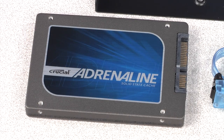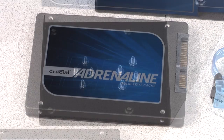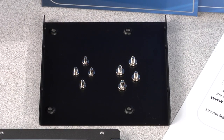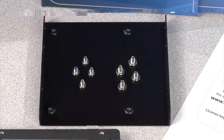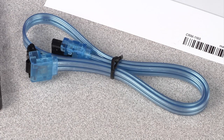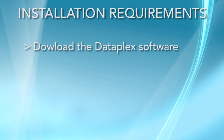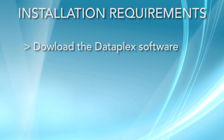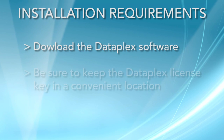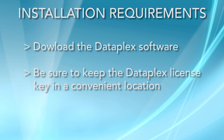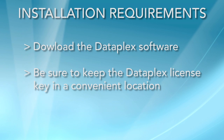Make sure you have all the components supplied in the packaging of the Adrenaline Cache Solution, which includes the 50 GB Crucial Adrenaline Solid State Cache, the 3.5 inch adapter bracket and 8 screws, the included SATA cable, and the Dataplex software license key card. Use the key card to download the Dataplex software and save it to your computer before you install your solid state cache. You will need to keep your key card handy because you will use it again when installing the software.